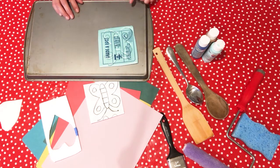For this step, you will need your smooth surface, your sponges, paint, construction paper, and spoon.